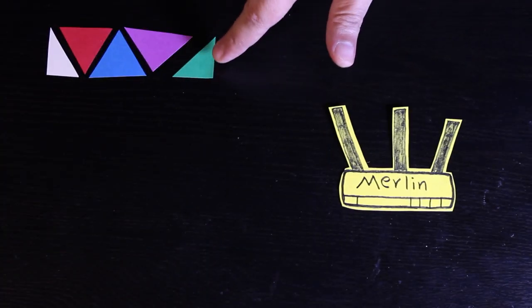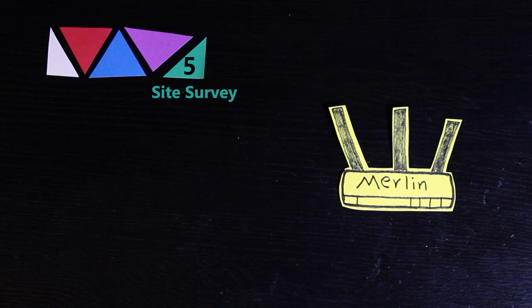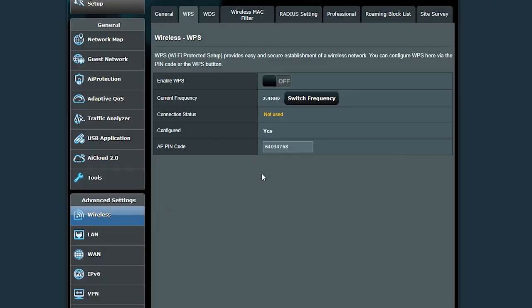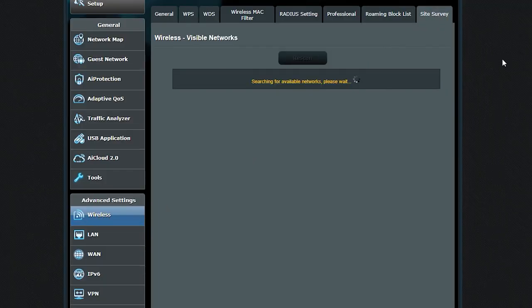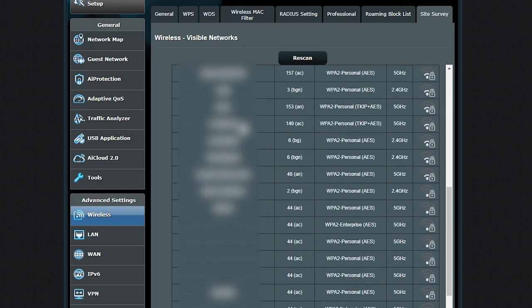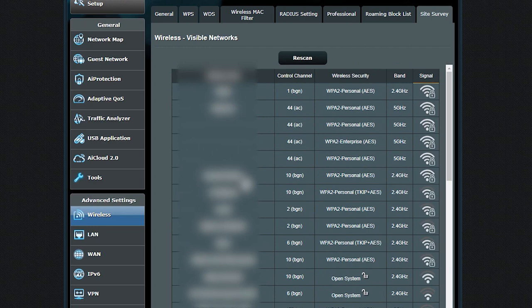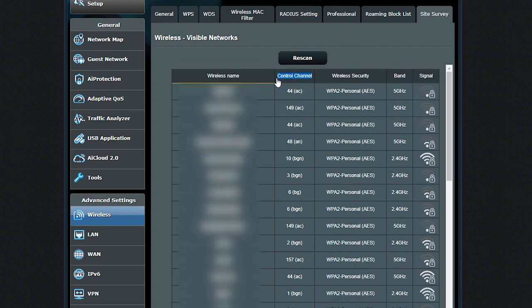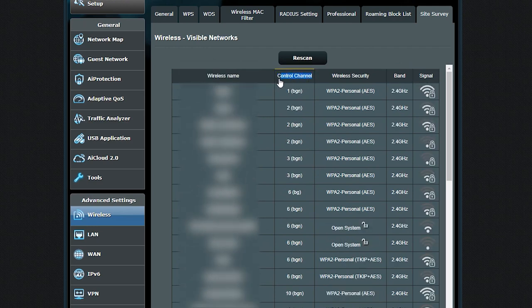The last one on my list, which is not the least, is the site survey feature in the Merlin firmware which shows me the available wireless networks in my area along with the channels they're using. This is very good information and can help me decide which channel is the least utilized in my area so I can select that channel for my wireless network.